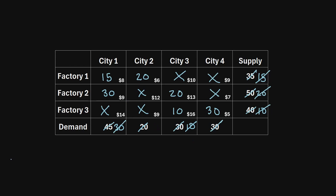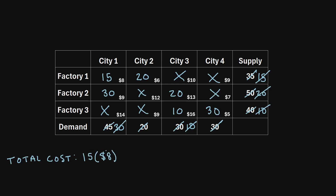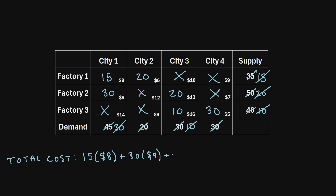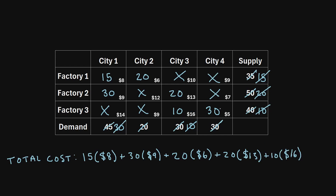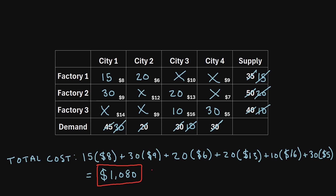To find the total shipping cost: 15 units × $8 (factory one to city one), plus 30 units × $9 (factory two to city one), plus 20 units × $6 (factory one to city two), plus 20 units × $13 (factory two to city three), plus 10 units × $16 (factory three to city three), plus 30 units × $5 (factory three to city four). The total shipping cost comes out to $1,080. That is the final answer using the least-cost method for the transportation problem.